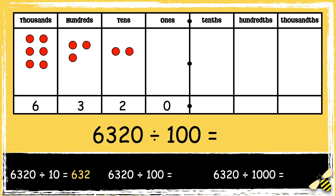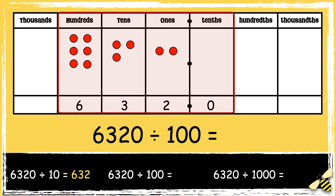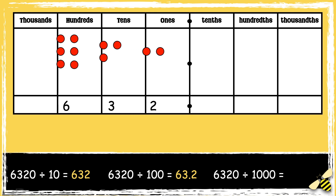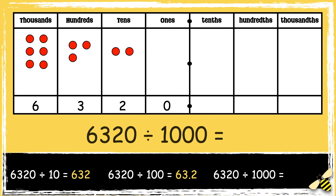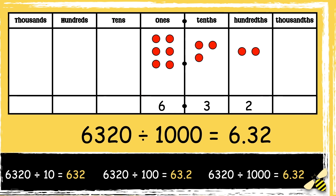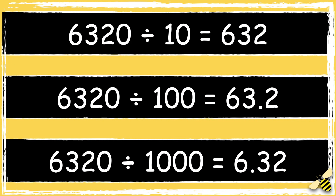Now let's divide the number by 100. When we divide numbers by 100, the digits move two places to the right. So the answer is 63.2. Now let's divide the number by 1000. When we divide numbers by 1000, the digits move three places to the right. So the answer is 6.32. So now we have divided a four-digit number by 10, 100, and 1000.